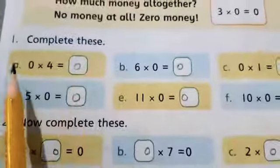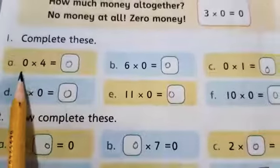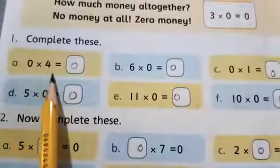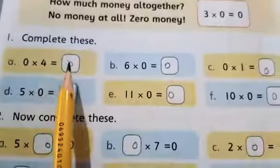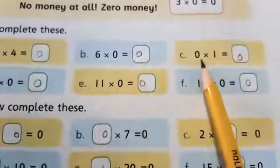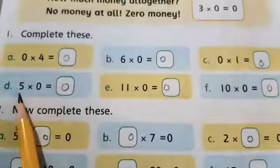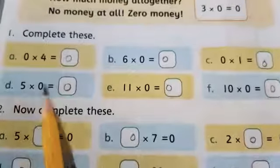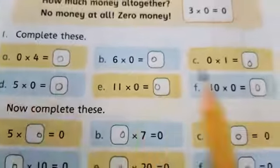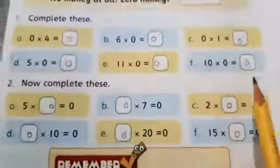Let's start working. Question number 1, complete these. Part A, 0 multiplied by 4 is equal to dash. If we multiply 0 with any number, the answer will become 0. 6 multiplied by 0 is 0. Then 0 multiplied by 1 is 0. 5 multiplied by 0, if we multiply 0 with any number, the answer will be 0. 11 multiplied by 0 is 0. 10 multiplied by 0 is 0.